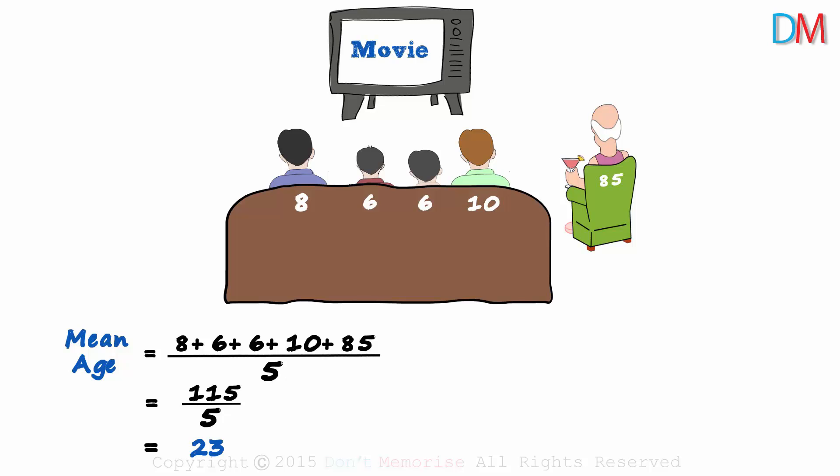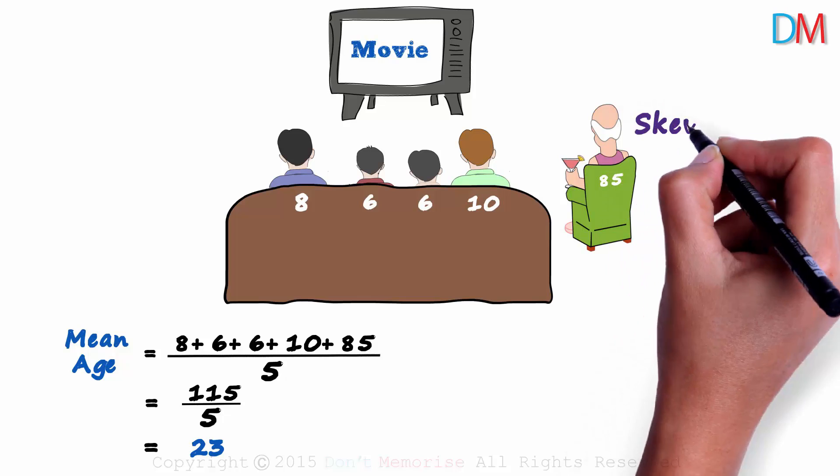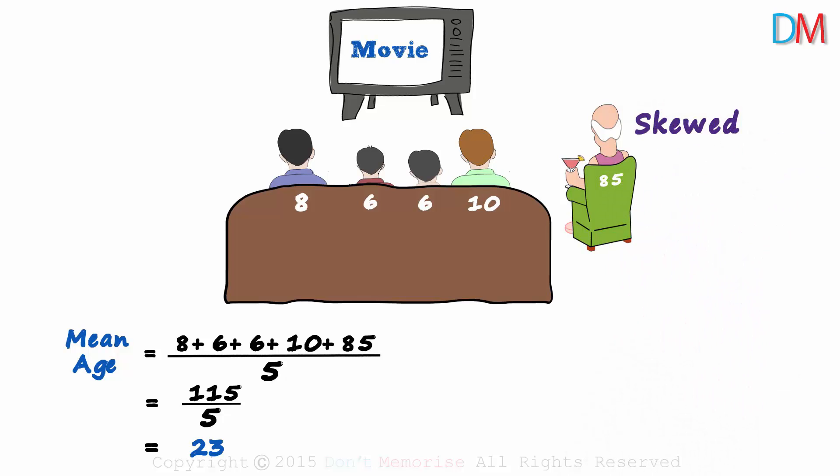And will grandpa be able to stay awake? Unlikely. In this case, the mean is not a good representation of the central value, and that is because this data is skewed by this one value. But wait, what will be the median age? For that, we will have to arrange the ages in ascending order.